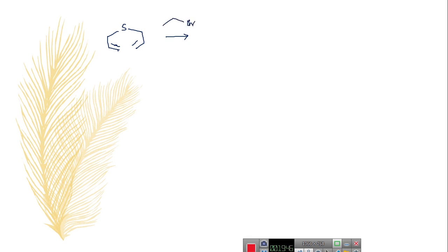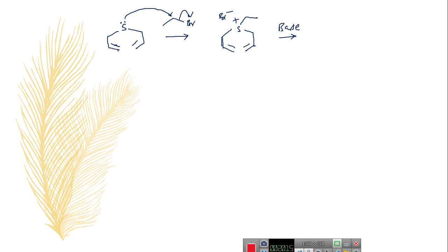Take a sulfide — di-allyl sulfide. Treat with bromoethane (ethyl bromide). The sulfur, with its lone pair of electrons, acts as nucleophile and attacks this electrophile. After nucleophilic substitution reaction, this sulfur gives you a sulfonium ion. Now this sulfonium ion, when treated with a base such as sodium hydride or phenyl lithium, abstracts the proton from either side — both are symmetrical — and gives you the vicinal ionic intermediate also called as sulfur ylide.